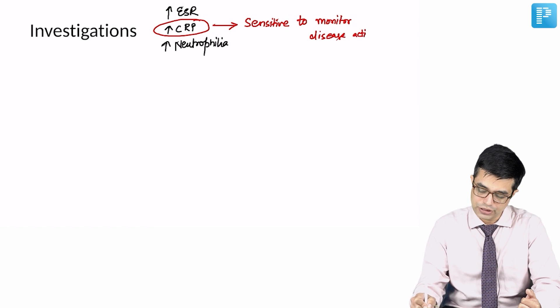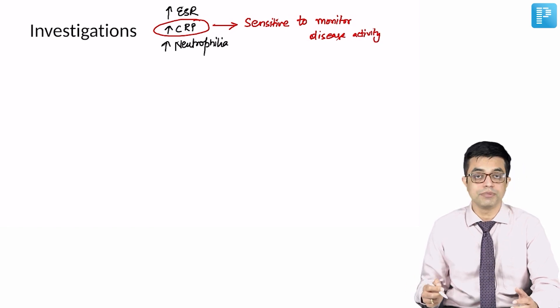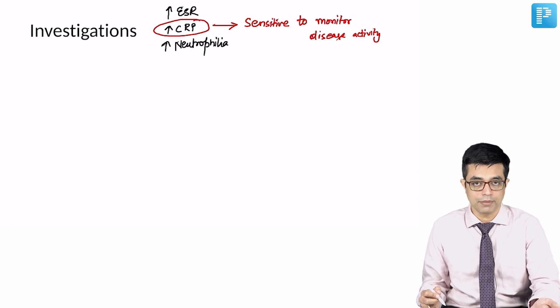When you give IVIG and the patient responds to therapy, the CRP levels tend to fall rapidly.